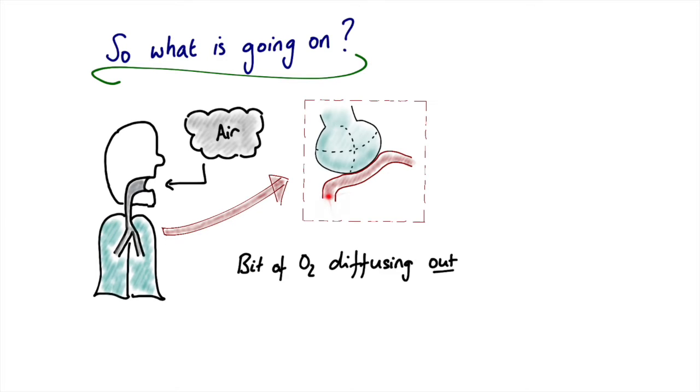So we'll get a bit of oxygen diffusing out down its concentration gradient. There'll be a small amount of CO2 diffusing into the alveoli down its concentration gradient, but again, only small amounts.